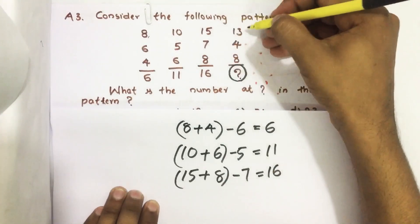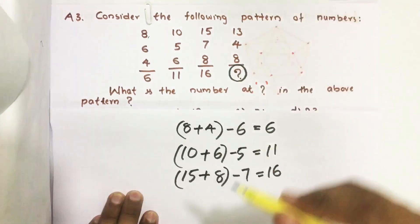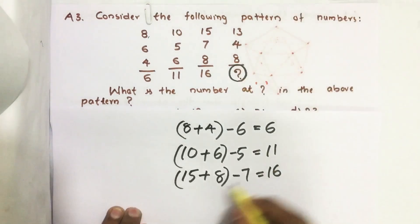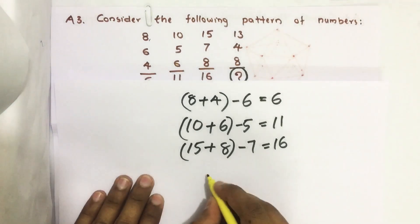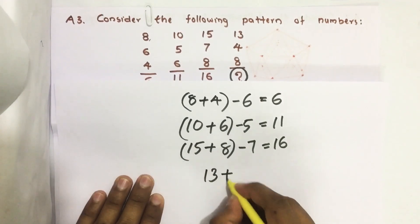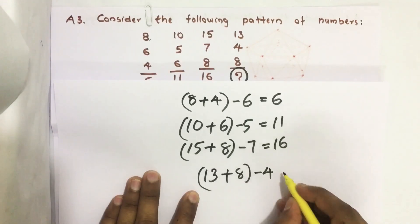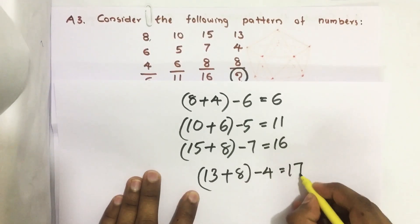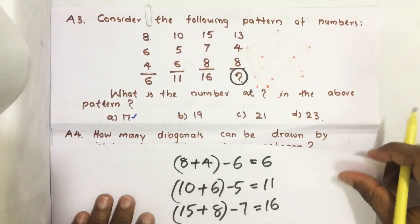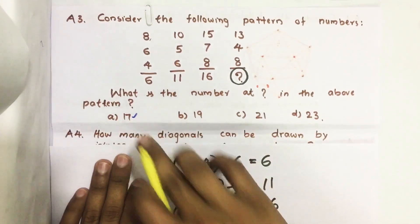The same way, we can find the number here: 13 plus 8 minus 4, that's 21 minus 4, we get 17. So our answer is option A, 17.